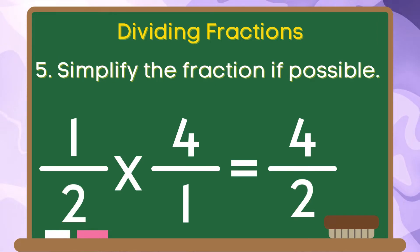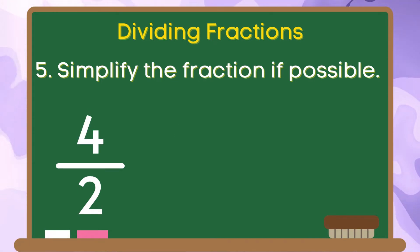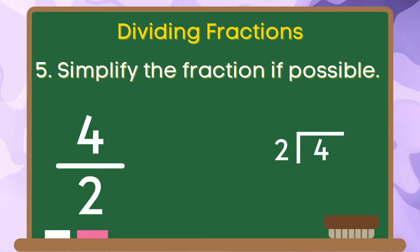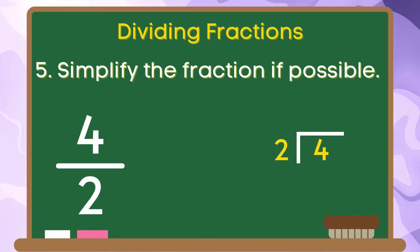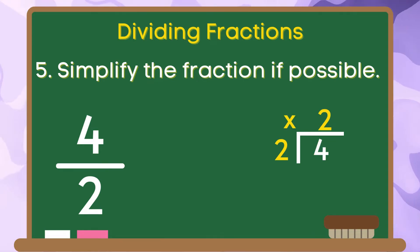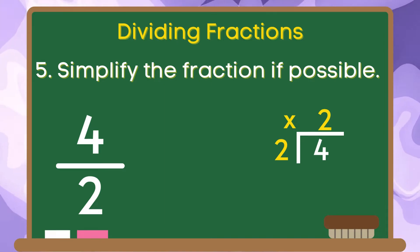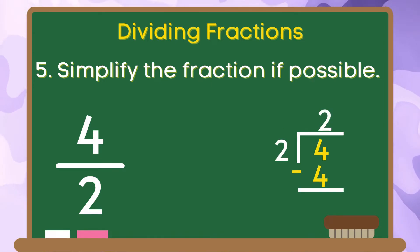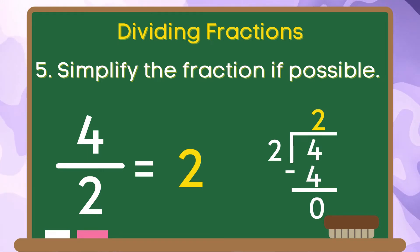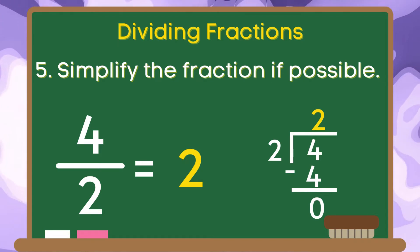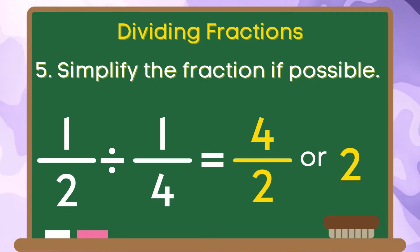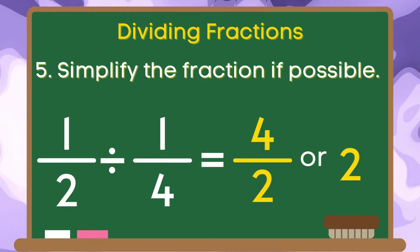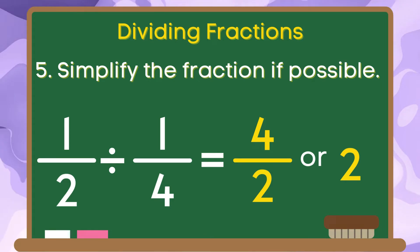And for the last step, we are going to simplify the fraction if possible. Since 4 over 2 is an improper fraction, we are going to divide 4 by 2 to get its quotient. 4 divided by 2 is equal to 2. Let us multiply our quotient by our divisor 2 — 2 times 2 is equal to 4. Let us subtract: 4 minus 4 is equal to 0. Since the quotient of 4 and 2 does not have any remainder, the simplified answer for 4 over 2 is 2. Therefore, 1 half divided by 1 fourth is equal to 4 over 2 or 2.